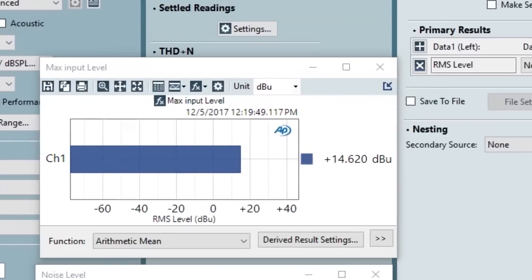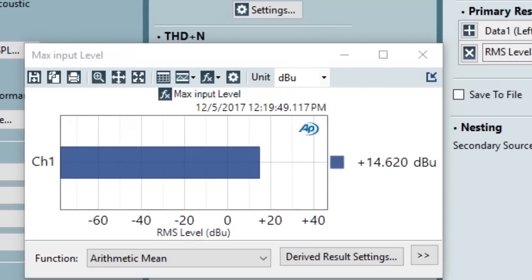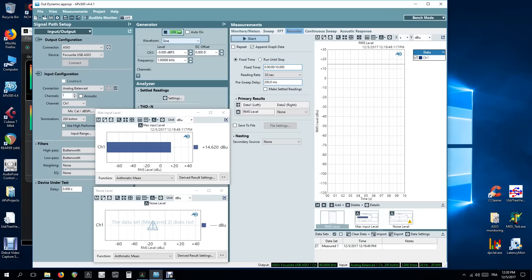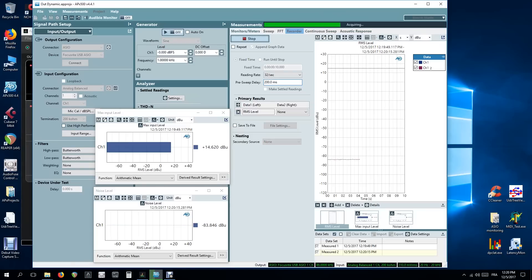Okay that gives us 14.620 and then we switch off the generator and we do our second sweep which gives us our noise, a dynamic range of, an output dynamic range, of 98.482 dB.